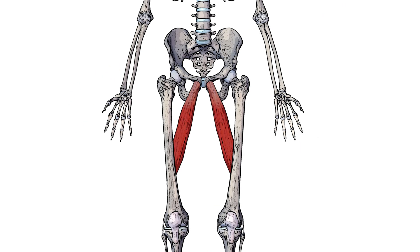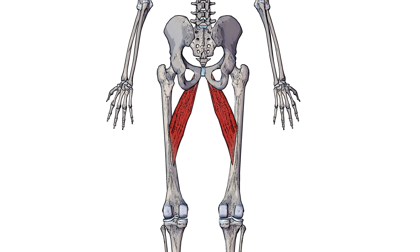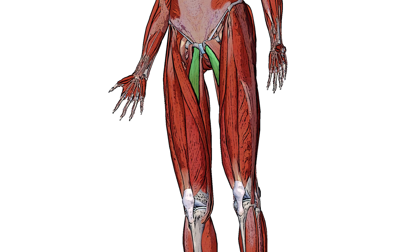Here we can see the adductor longus in isolation. We can see it's connecting the hip to the femur. We've now swapped from an anterior to a posterior view and we can see the adductor longus again but from behind. Moving on to a superficial view, you can see highlighted here in green the adductor longus amongst the other muscles of the thigh.